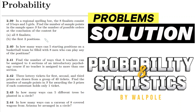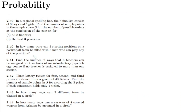Welcome back guys, I hope all of you are fine. Today we are going to solve a bunch of questions which are basically relevant to each other. These start from question number 2.39. The statement of this question is: in a regional spelling bee, the eight finalists consist of three boys and five girls — so there are basically eight contestants. Find the number of sample points in the sample space S for the number of possible orders at the conclusion of the contest for (a) all eight finalists, and (b) the first three positions.